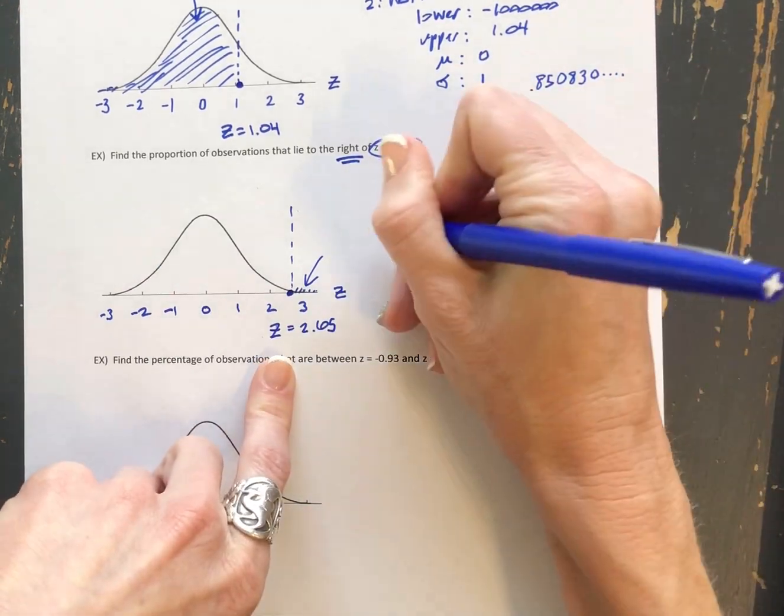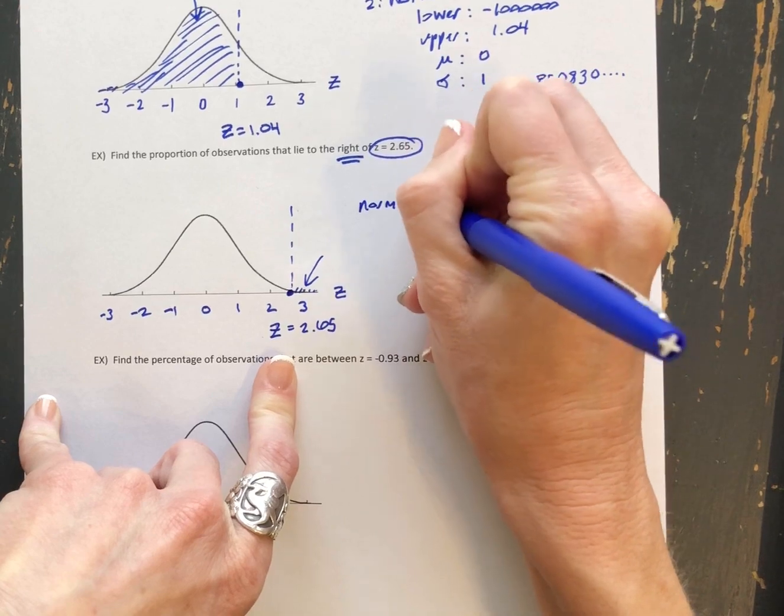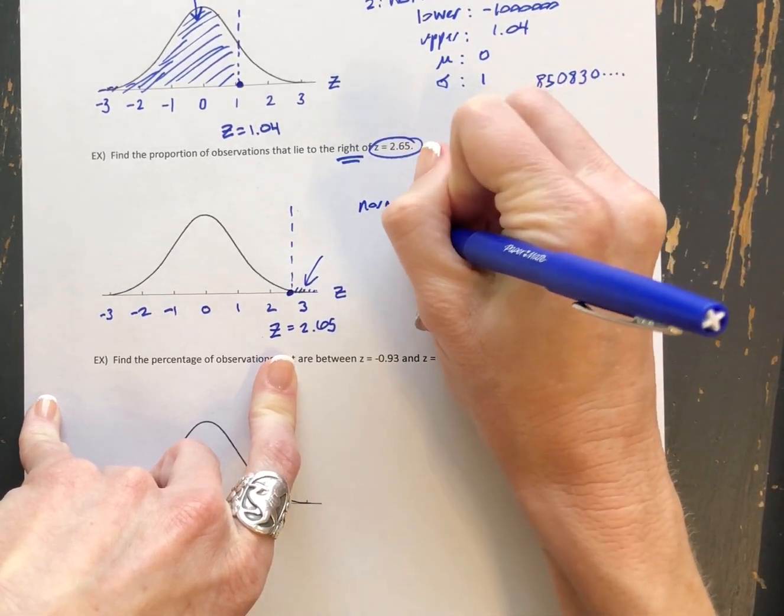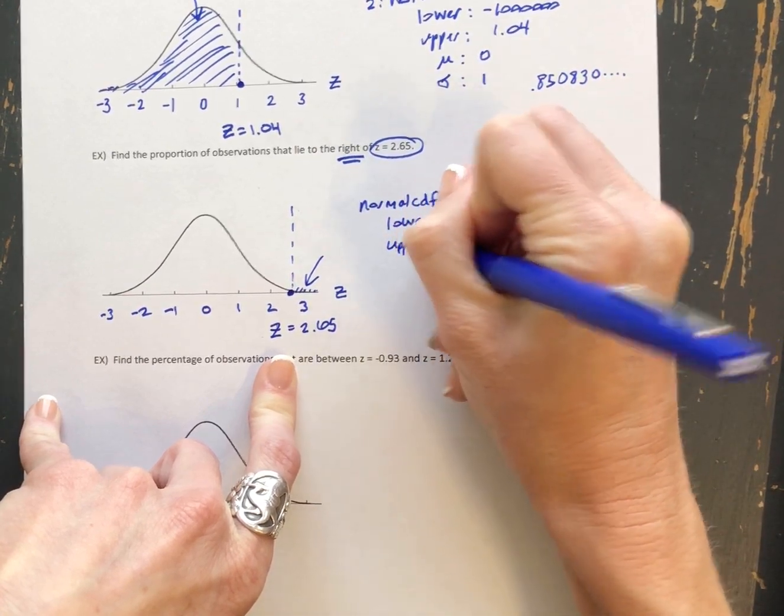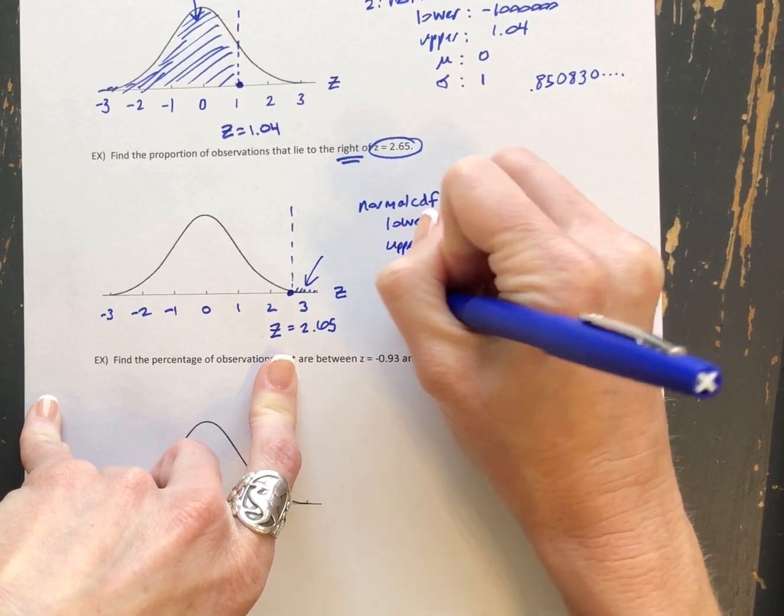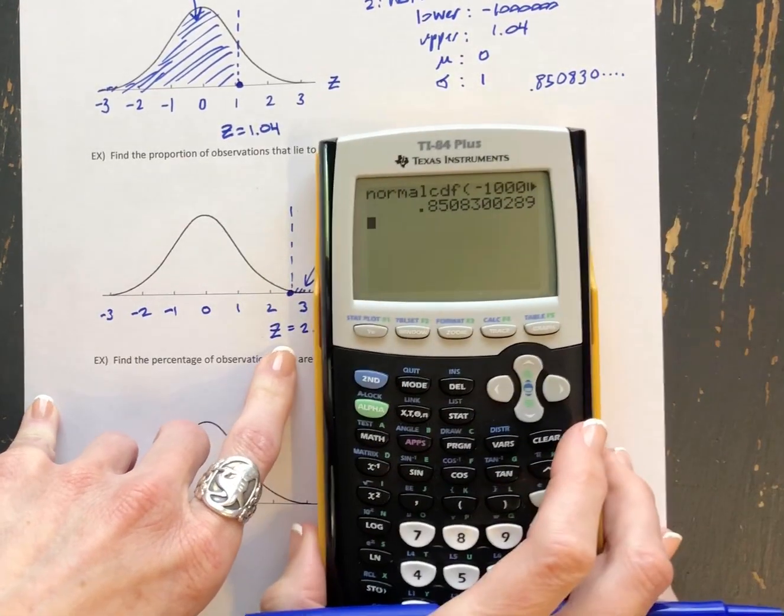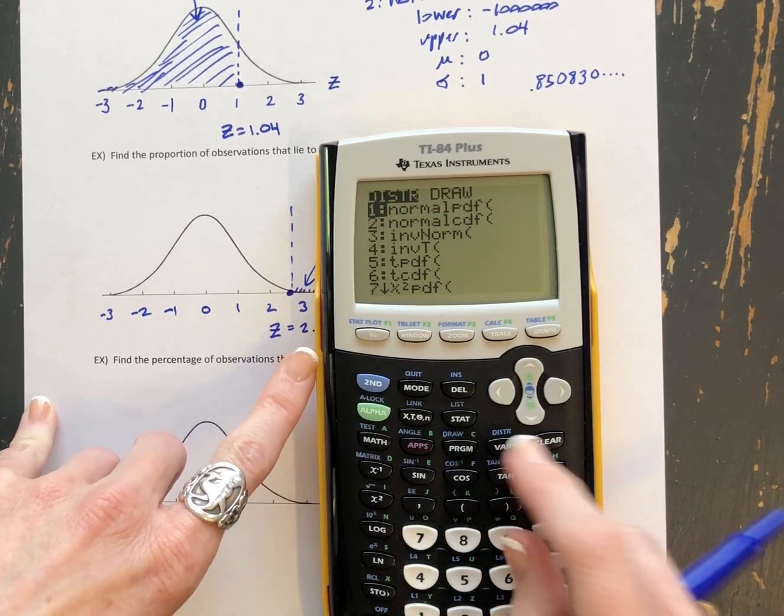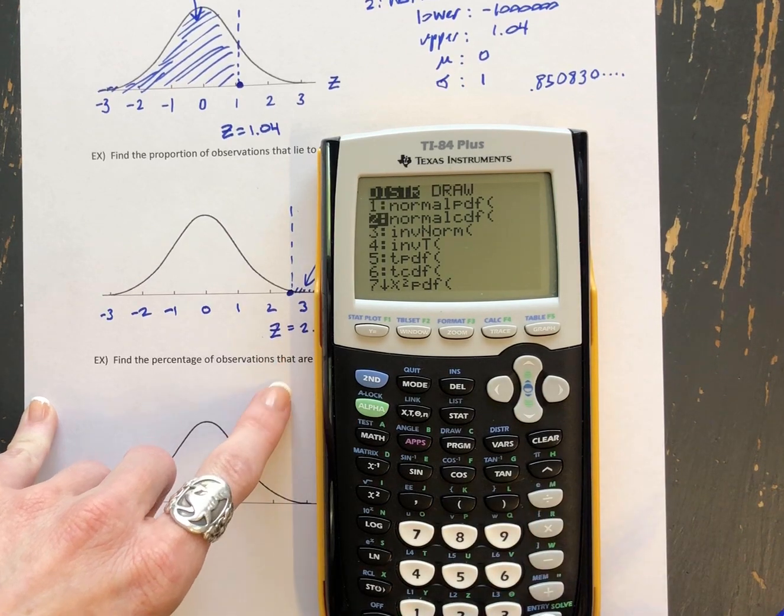So we're going to choose normal CDF again. We are going to have lower, upper, mean, and standard deviation. So let me go back to the calculator. As a reminder, it was 2nd, distribution, and then option 2, which is normal CDF. Hit enter.